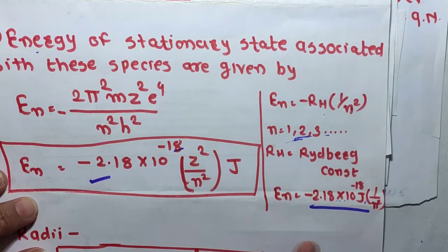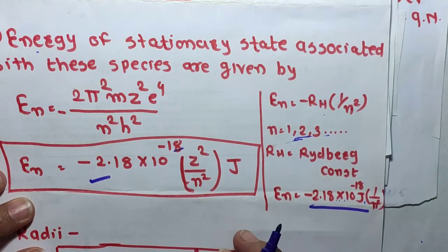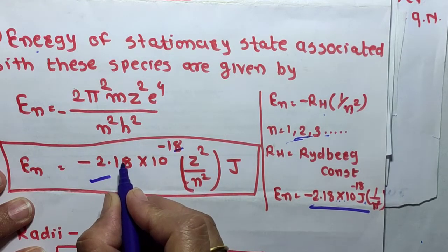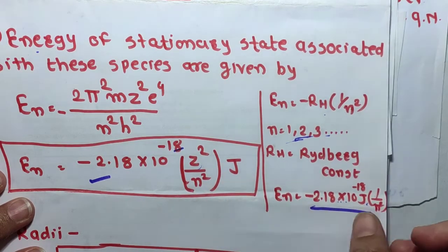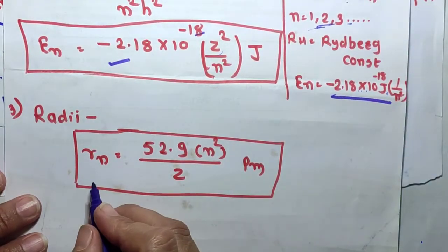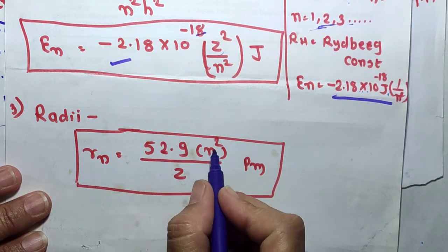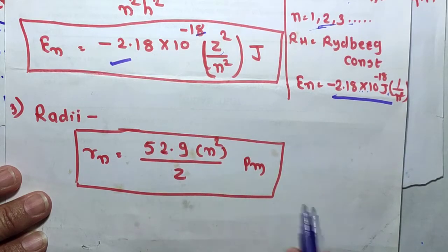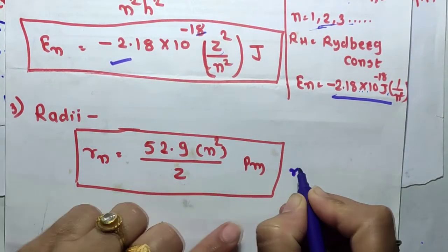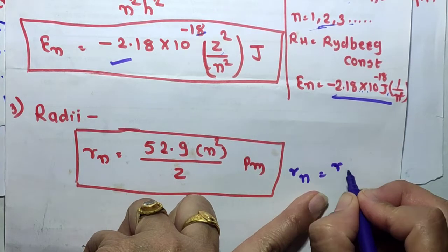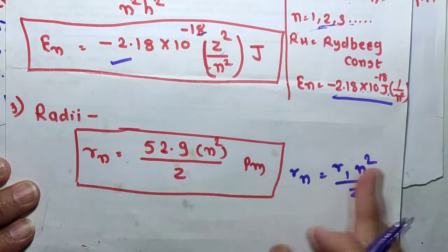Bohr's theory can be applied to hydrogen-like species, for example He²⁺, Li²⁺, and Be³⁺. The energy of the stationary states associated with these species is given by: En = −2.18 × 10⁻¹⁸ × Z²/n² joules. The radius of these species is given by: Rn = 52.9 × n²/Z pm. We can also write this as: Rn = R1 × n²/Z, since R1 = 52.9 pm.